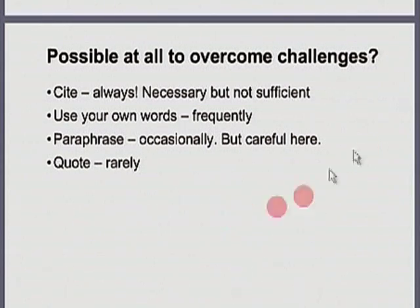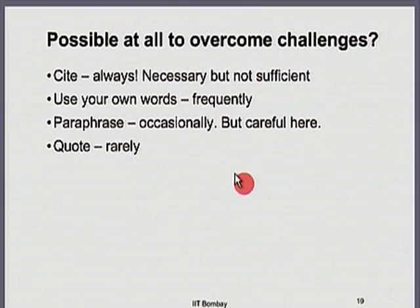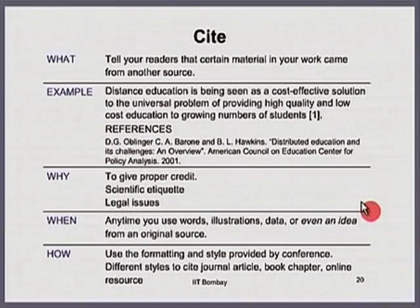Here are some ways to overcome these challenges. First, always cite — give credit whenever it is necessary, but citing alone is not sufficient. Second, use your own words or summarize as often as you can. Third, paraphrase — which is somewhere between using your own words and directly quoting; you are rewriting somebody's ideas, not completely in your own words. You can do it but you have to be careful; it is much better to use your own words. Fourth, quoting — directly quoting, especially in engineering, computer science, chemistry, mathematics, and physics — is very rarely needed.